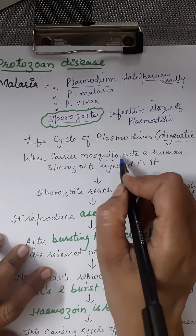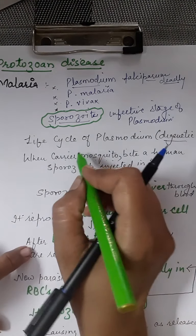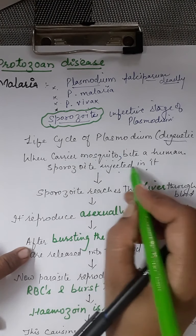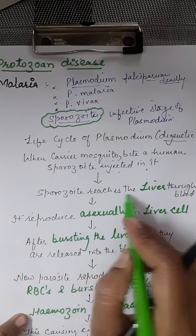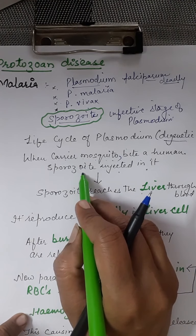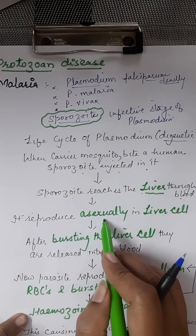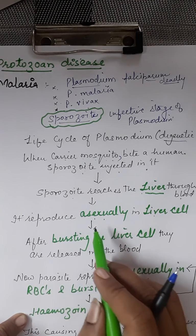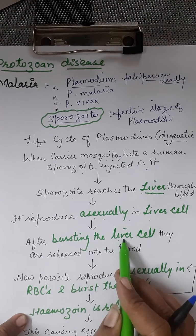When a carrier mosquito — that is, a mosquito which is carrying sporozoites — bites a human being, it injects sporozoites into the body. I'll write it in a flowchart manner so it is easy to learn. The sporozoite then reaches the liver through the blood. Along with the saliva released by the mosquito, the sporozoites are also released. In the liver, they reproduce asexually inside the liver cells, producing more and more sporozoites, and as a result the liver cells get burst.